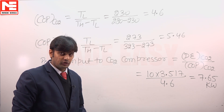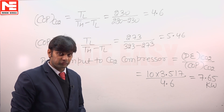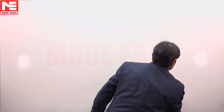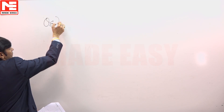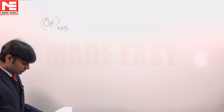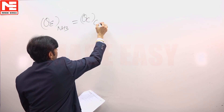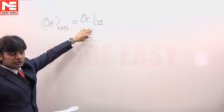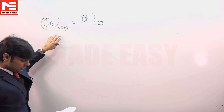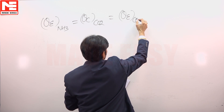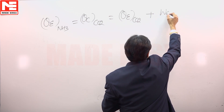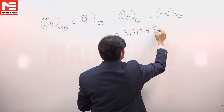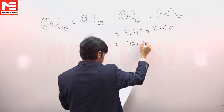Now we will calculate the heat absorbed by the ammonia refrigerant across the evaporator. In the lower circuit CO2 circulates and in the upper circuit ammonia circulates. The heat rejected by the CO2 refrigerant equals the heat absorbed by the ammonia refrigerant, which is the CO2 refrigeration effect plus the work of the CO2 compressor: 35.17 plus 7.65, equal to 42.82 kilowatts.